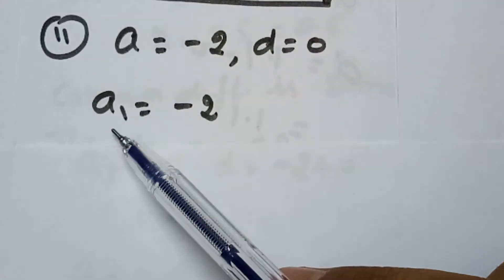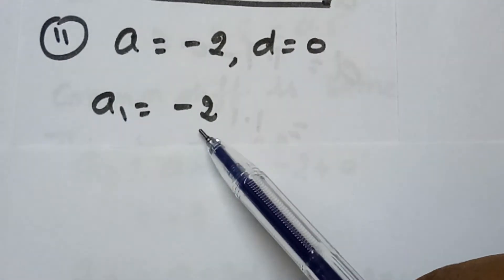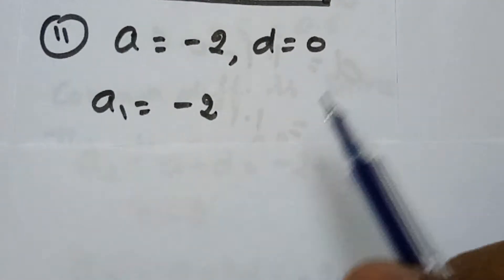So A, which is the first term, we write A₁ equals A, which equals minus 2. This is the first term of the AP.